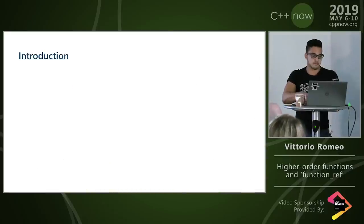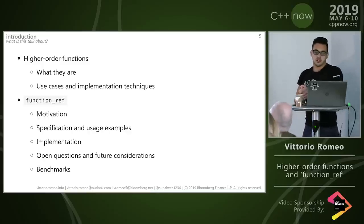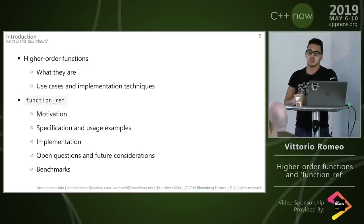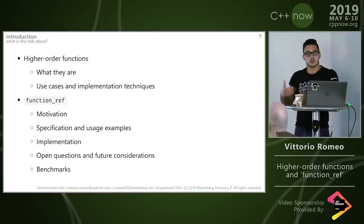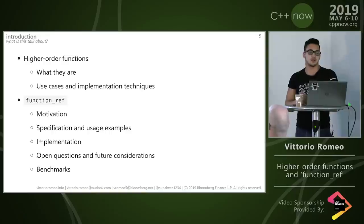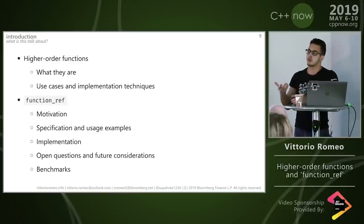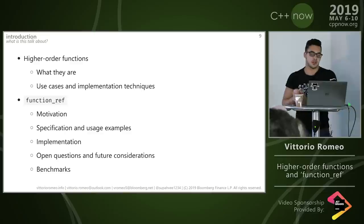So what are we going to talk about today? We'll start with an introduction about higher-order functions — what they are, how we can use them in our code, and how we can implement them. The second half of the talk will be about function_ref, which is a proposal in flight for C++20. I'll tell you why it exists, how it is specified, how we can use it, show an implementation, cover open questions, and finally see some benchmarks against std::function.